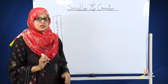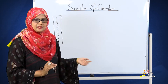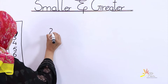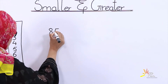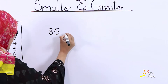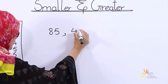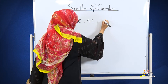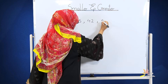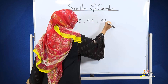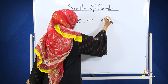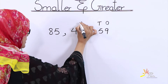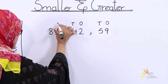Here I have some numbers to judge which number is greater and which number is smaller. First of all, I will write two-digit numbers with ones and tens places. You have learned about ones, tens and hundreds concepts. For your convenience, I will write here ones and tens.